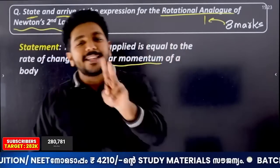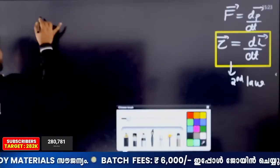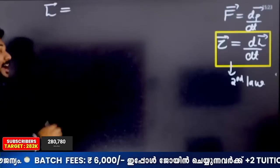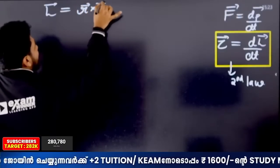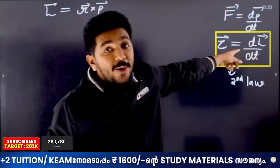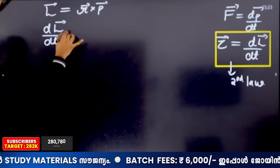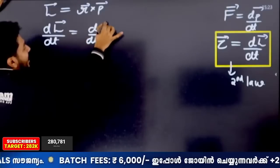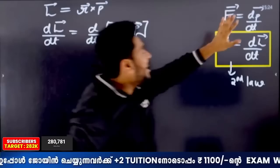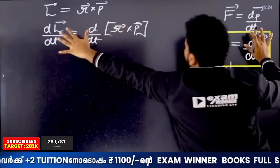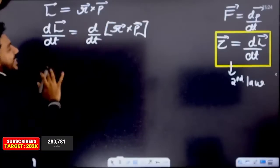The derivation — arrive at this expression. The first step: the angular momentum equation is L = R × P. We take D by DT of L, which is D by DT of R × P. Our task is to differentiate this. One side is ready: DL by DT equals torque.